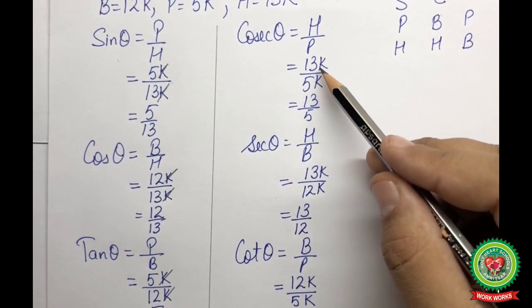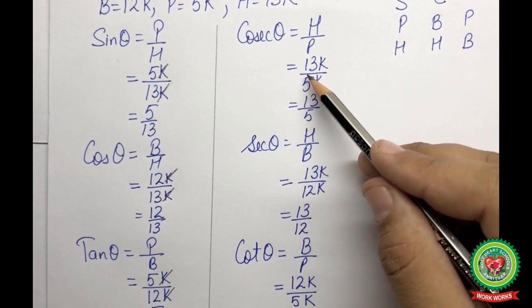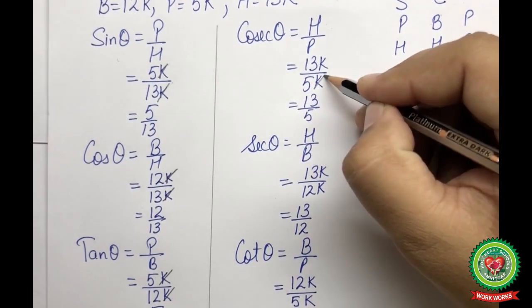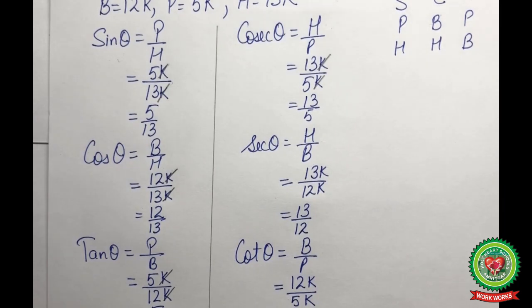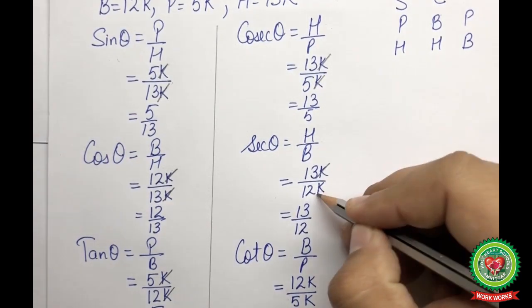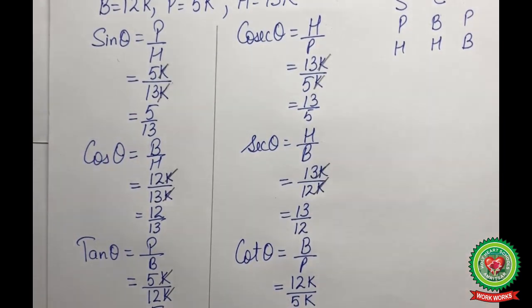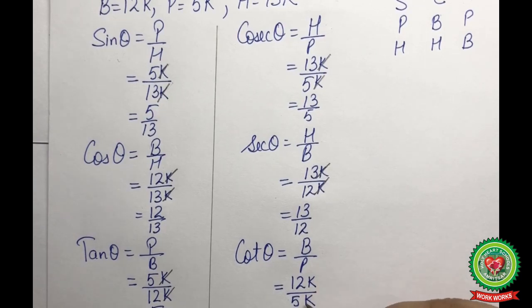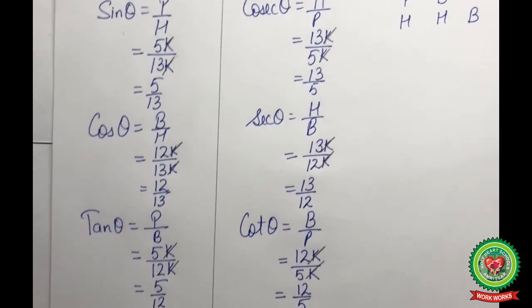Secant theta = h/b = 13k/12k = 13/12. Cotangent theta = b/p = 12k/5k = 12/5. In each case, k and k cancel out, giving us the simplified ratio.